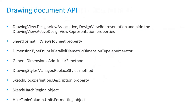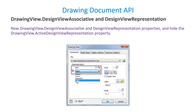Next we move on to Drawing Document APIs. Here is a list of APIs related to Drawing Document which are enhanced in Inventor 2021. Two new properties have been added to the Drawing View object: one to get whether the drawing view is associated or not, and another to get the associated view of the drawing view. In earlier versions, a property called Active Design View Representation was used for this, but it has now been removed and these two new properties have been introduced.